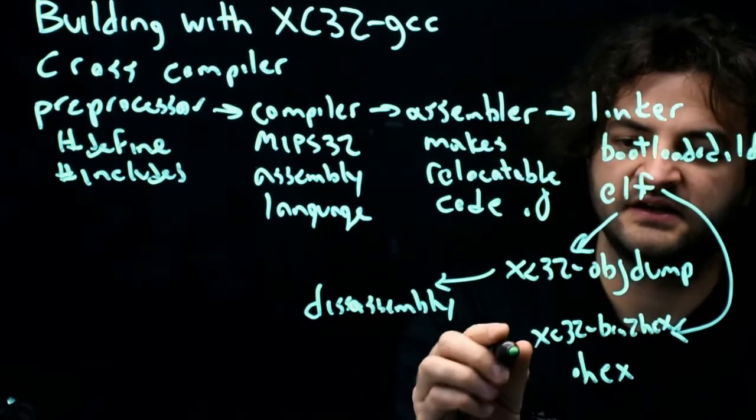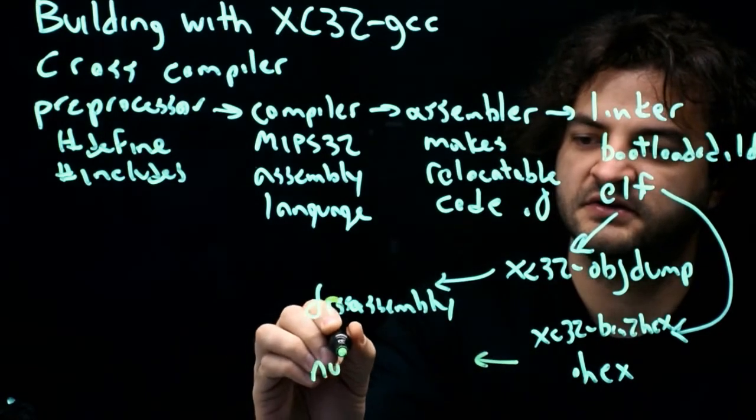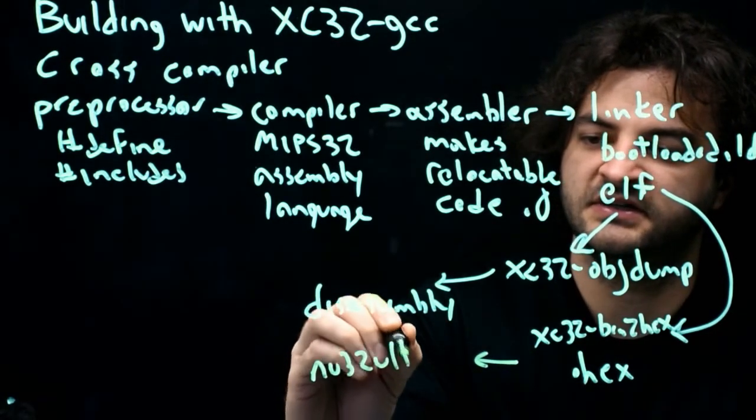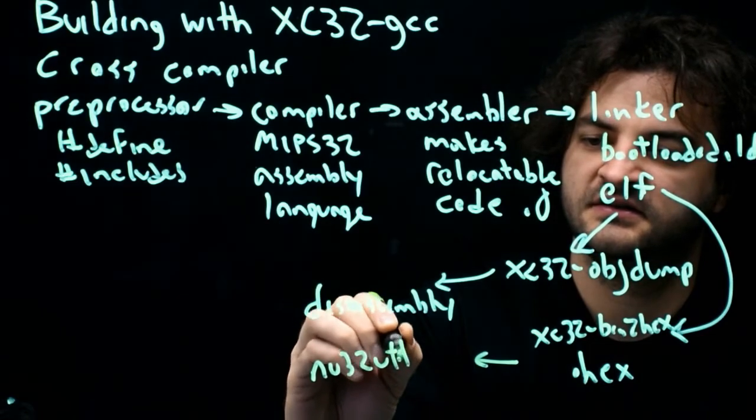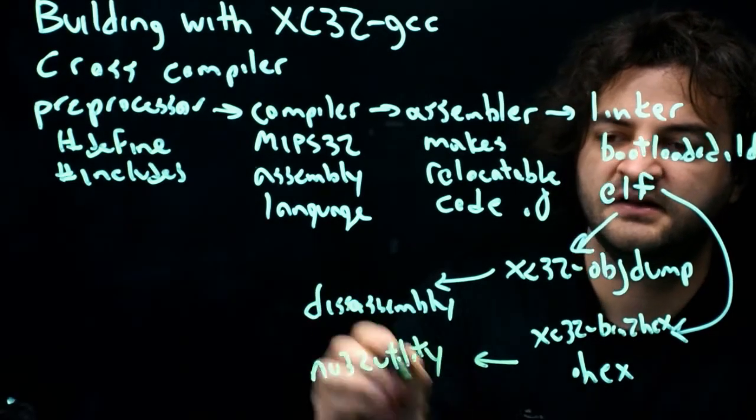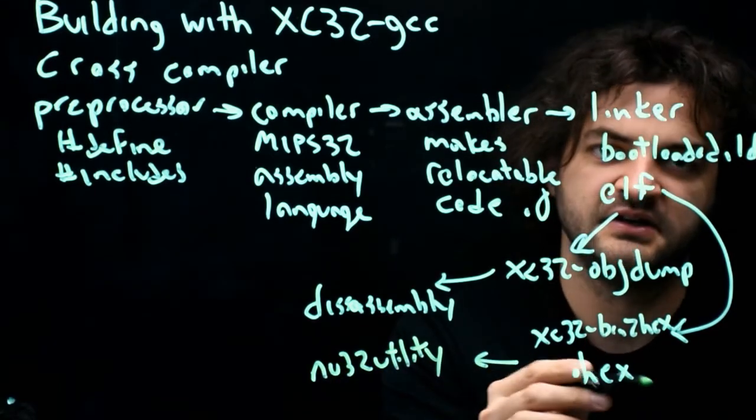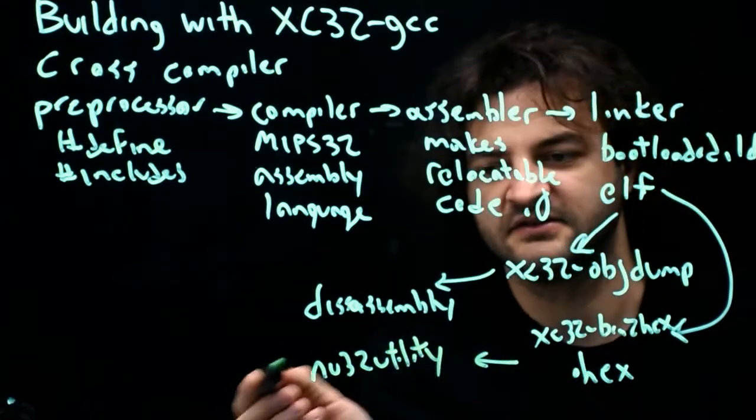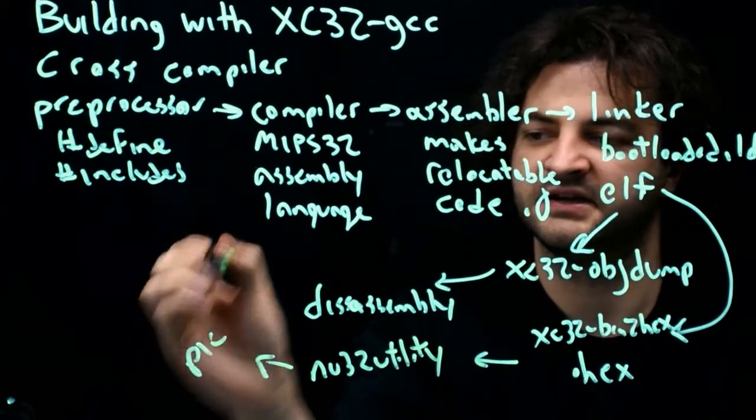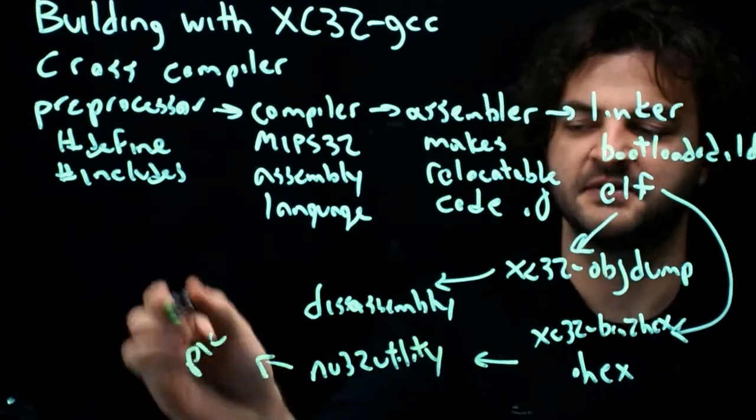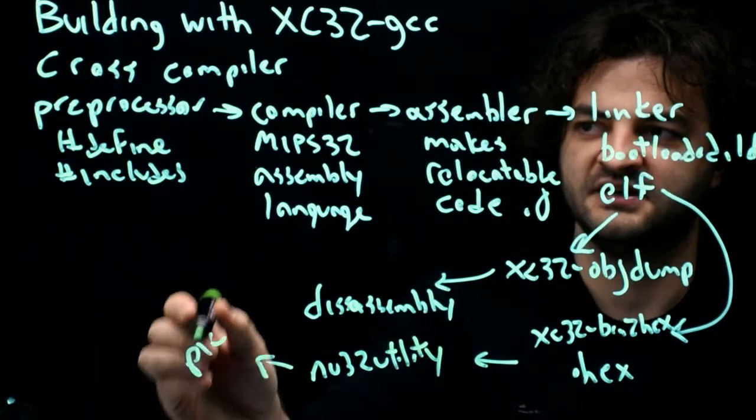So the .hex then goes to the NU32 utility, and the utility opens up the serial port, it opens up the .hex file, it reads lines from the .hex file, sends it to the PIC. The PIC in bootloader mode then uses the program itself, and then when you reset the PIC, the code runs.